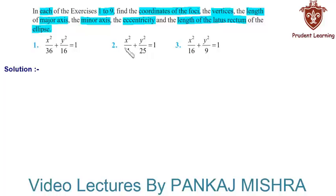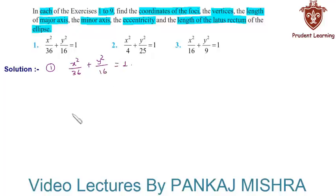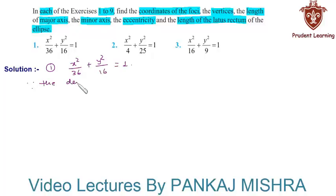In our first question, the given equation is x² / 36 + y² / 16 = 1. Since the denominator of x² / 36 is larger than the denominator of y² / 16, the major axis will be along the x-axis.